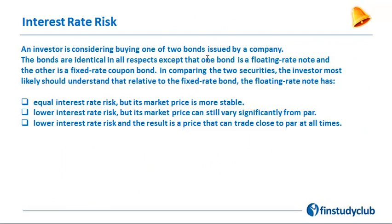An investor is considering buying one of two bonds issued by a company. The bonds are identical in all respects except that one bond is a floating rate note and the other is a fixed rate coupon bond. In comparing the two securities, the investor most likely should understand that, relative to the fixed rate bond, the floating rate note should have lower interest rate risk. Interest rate risk is the dominant risk when investing in bonds — if interest rates go down, bond prices go up.